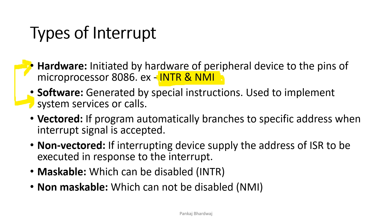Another classification is vectored and non-vectored interrupts. Vectored interrupts are those where the program automatically branches to a specific address — the vector location of the interrupt service routine is defined and given by the 8086 itself. Non-vectored interrupts are those in which the ISR address is not fixed; instead, it is provided by the interrupting device generating the interrupt request. That device supplies the address of the ISR in memory to the microprocessor.